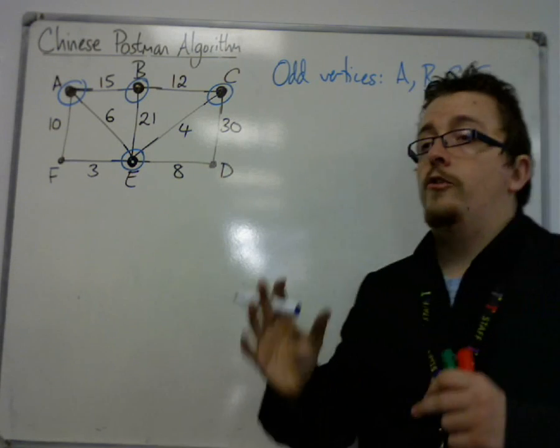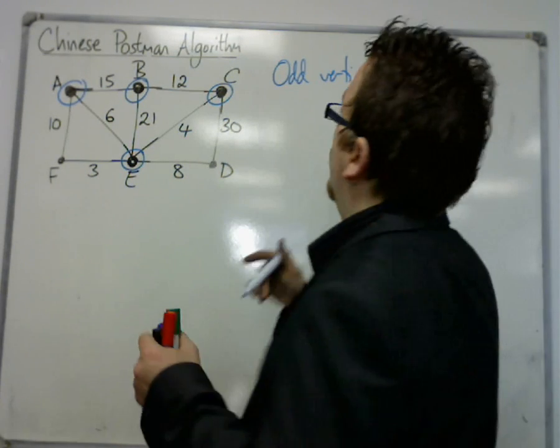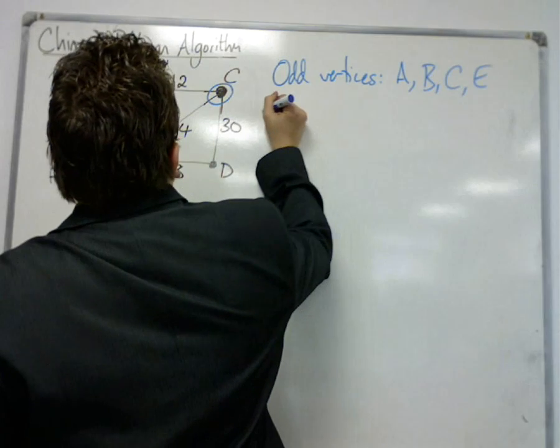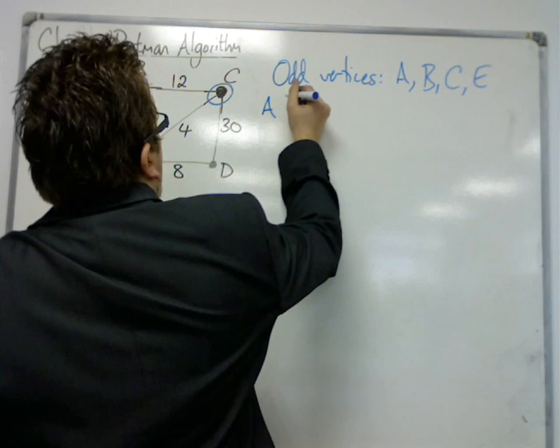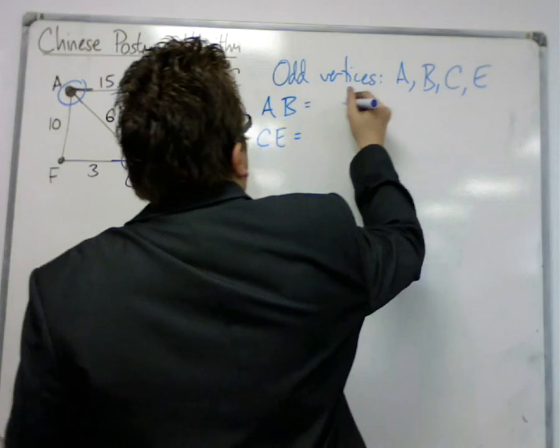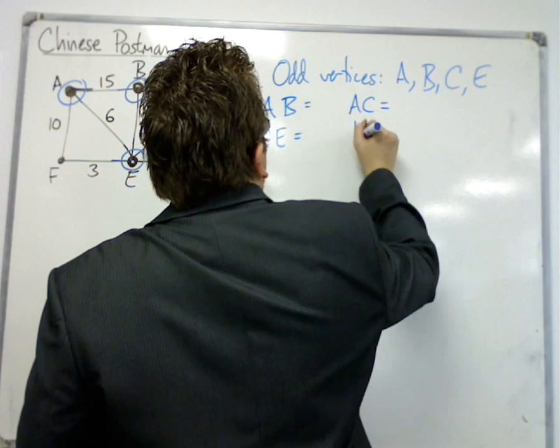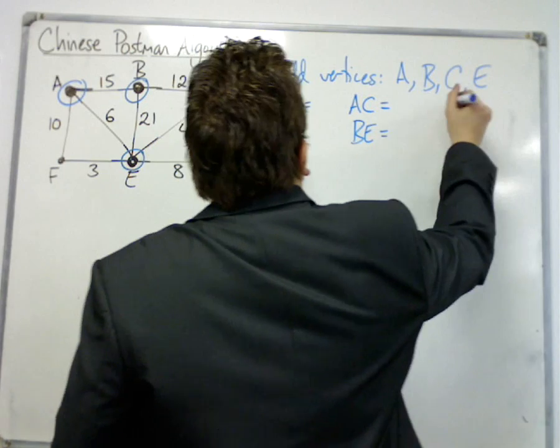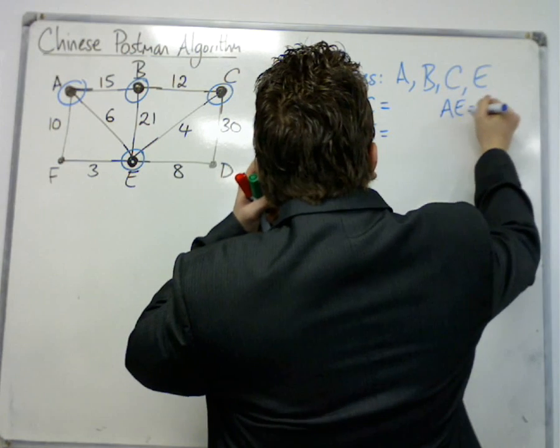Then we're going to pair up the odd vertices in the three different ways that we can. We've got A, B, and C, E. We're going to have A, C, and B, E. And we're going to have A, E, and B, C.